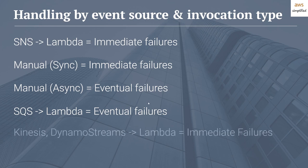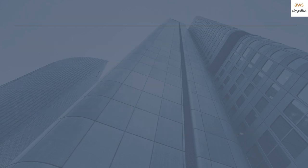The last event source is Kinesis and Dynamo streams. The delivery to Lambda will result in an immediate failure in the same kind of scenario — have a DLQ set up here so that you can capture these failures.